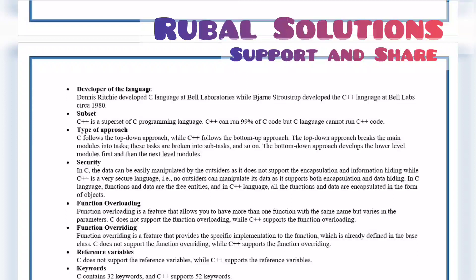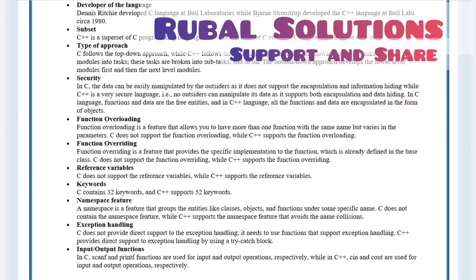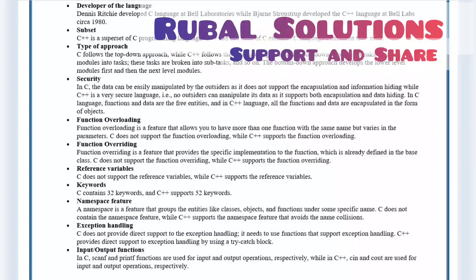Reference variable. C does not support reference variables while C++ supports reference variables. Keywords. C contains 32 keywords and C++ supports 52 keywords. Namespace feature. A namespace feature is the feature that groups entities like classes, objects and functions under some specific name. C does not contain the namespace feature while C++ supports the namespace feature that avoids name collision.